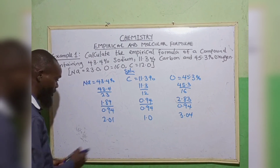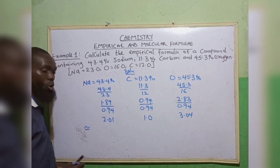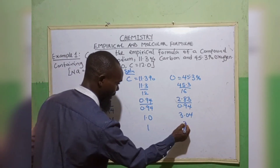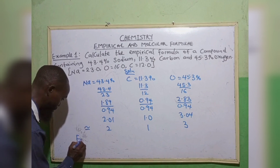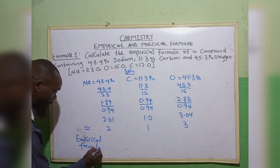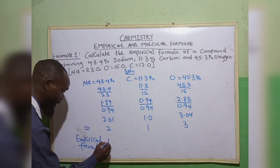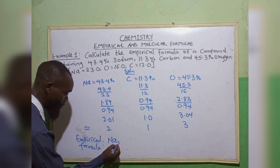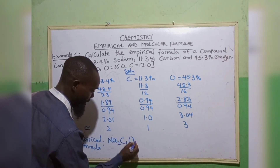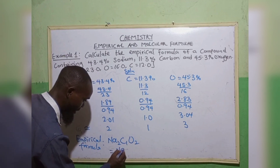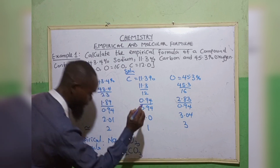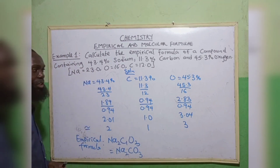The last step is to convert to whole numbers. We have 2, we have 1, we have 3. So our empirical formula will now be: sodium Na is 2, carbon is 1, oxygen is 3, which is Na₂CO₃.